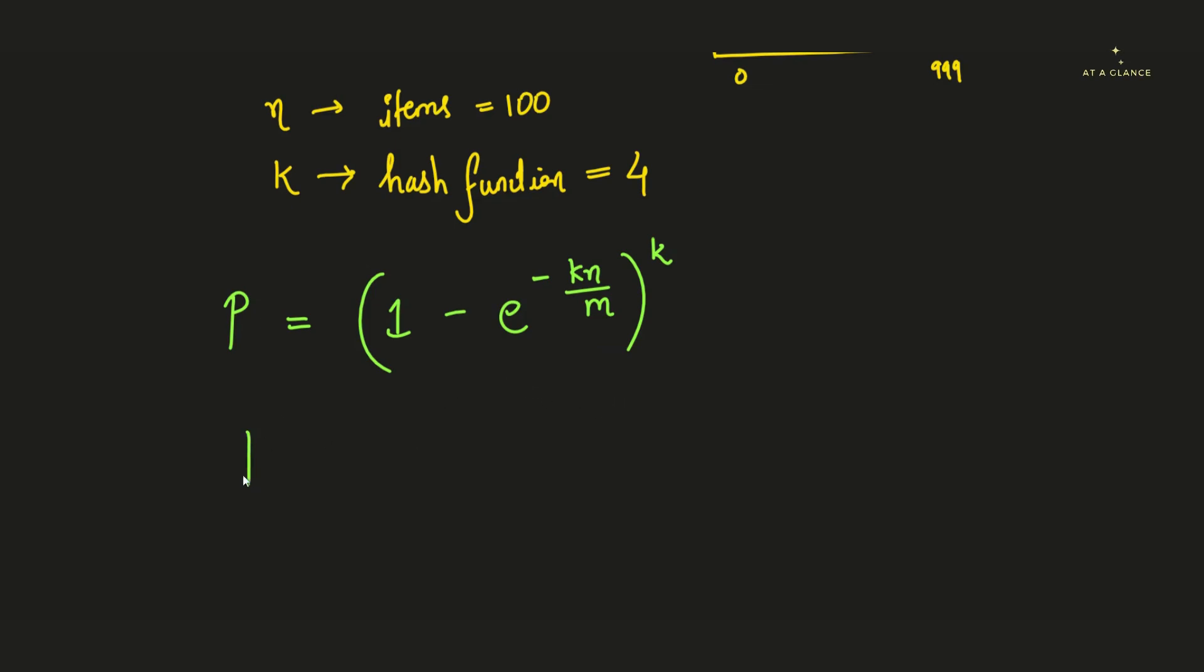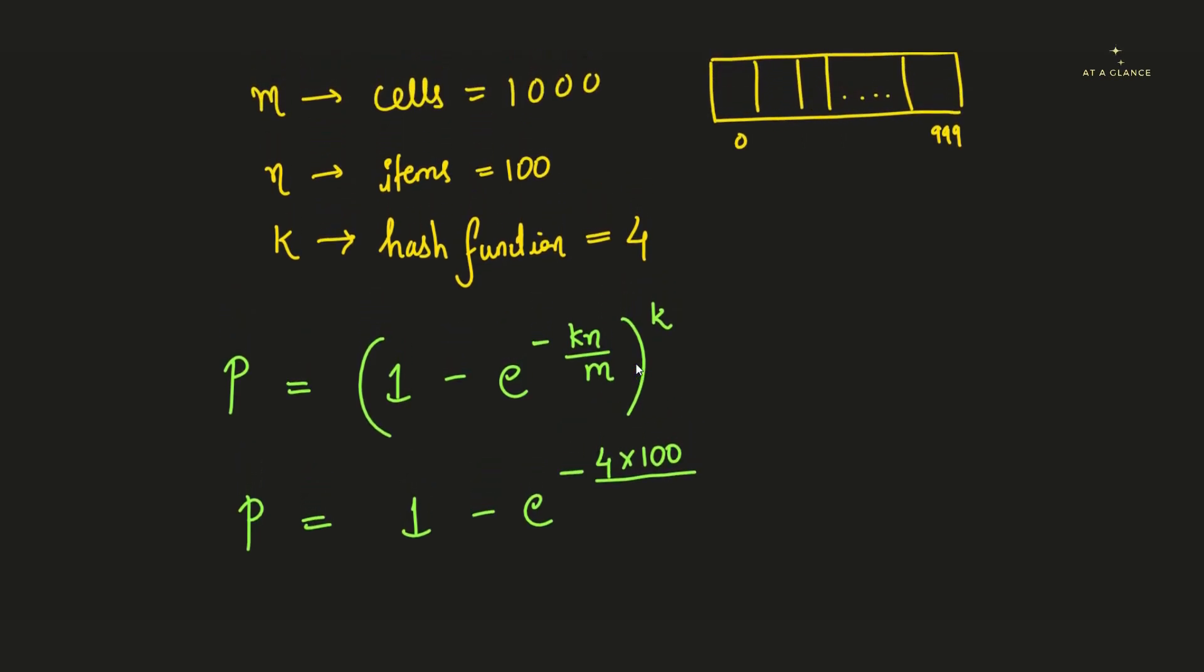So let's feed all the values in place of all these variables. So 1 - e^(- what is k? k here in the given data is 4, multiplied by n. So what is n? It is 100.